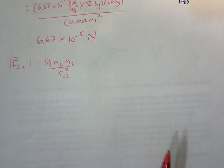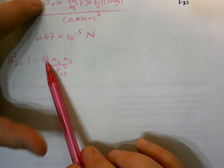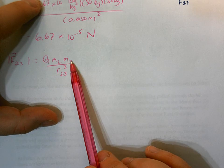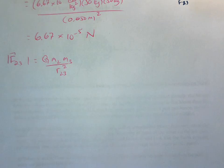Now, before we do all this punching in of the numbers, G is the same. M2 and M3 are both 50, and that distance between 2 and 3 is also 0.050.